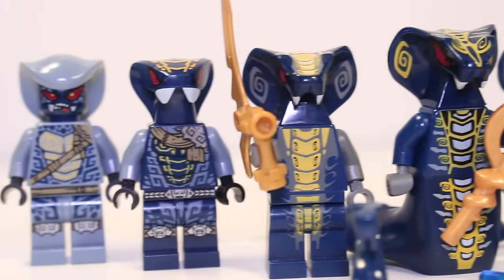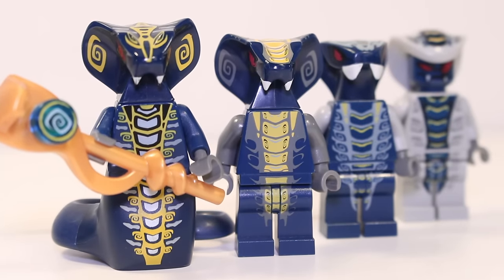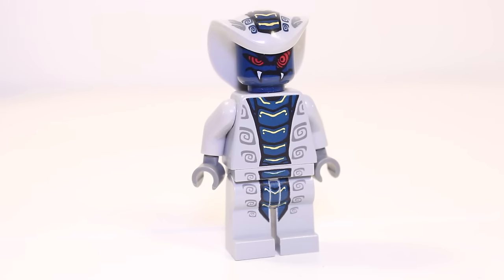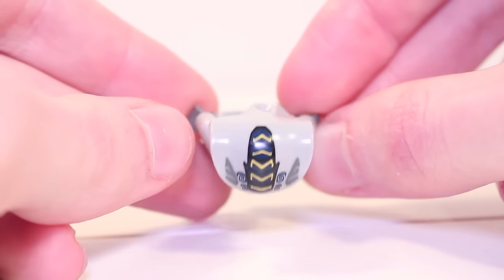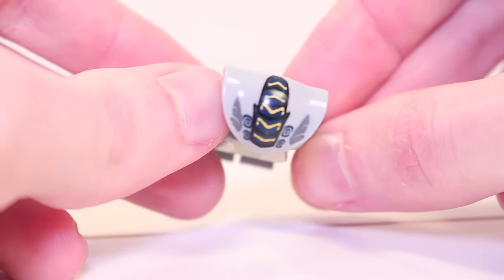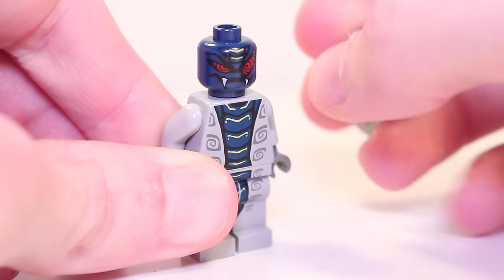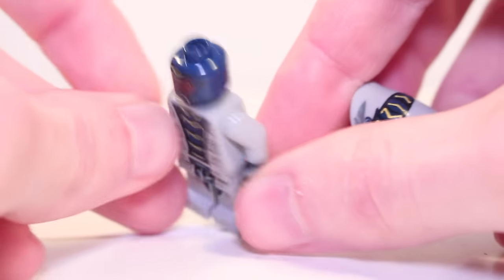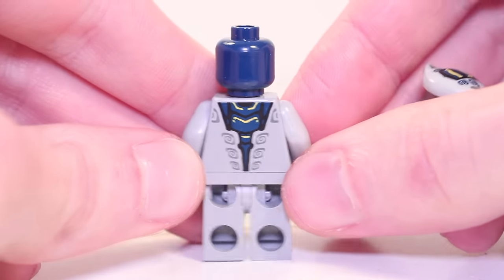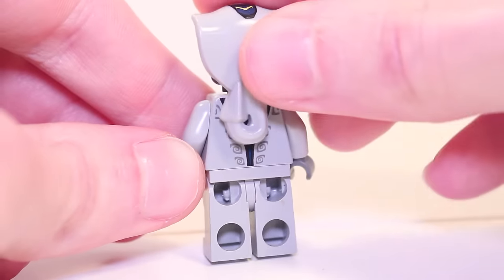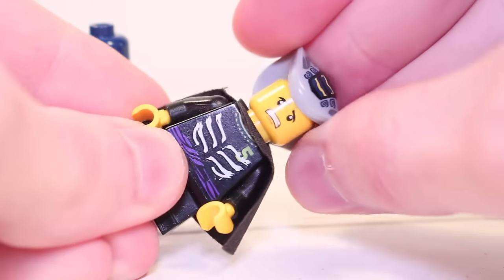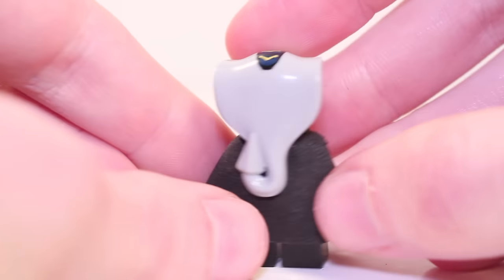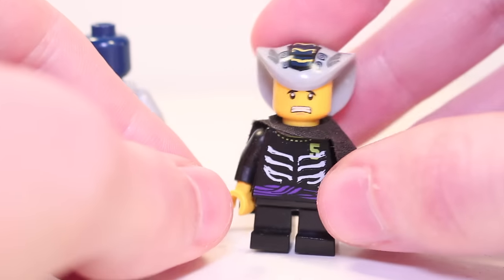The first tribe released was the Hypnobrai, blue and grey snakes with the power to hypnotize anyone they like with the rattle of their tail. Rattler is the low level warrior of the tribe, distinct from the others by using a regular minifigure head with this awesome cobra hood attached to the top. His face is blue with fangs and hypnotic red eyes. I really like how it lines up with the blue stripe on his torso and hood, which from the back also has a small tail molded into it. Rattler's hood can also be used on Lloyd to recreate that time when he snuck into Ouroboros in the world's most authentic serpentine costume.